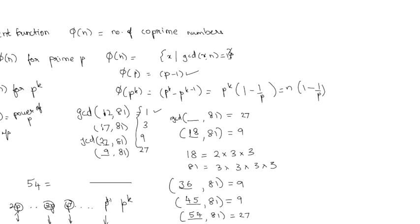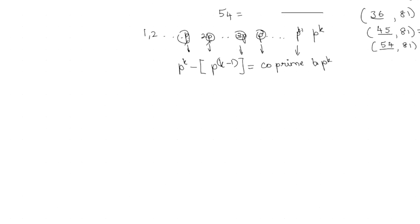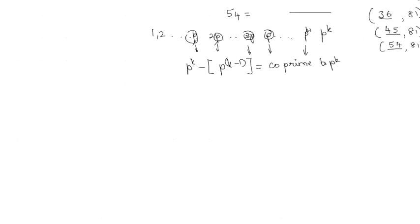Now we will look at the next case: n is of the form p1 times p2. What could phi of n be? We have n/p1 multiples of p1 and n/p2 multiples of p2. But there will be one common multiple for both, which is n itself.